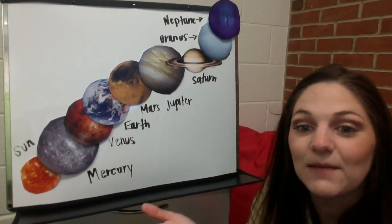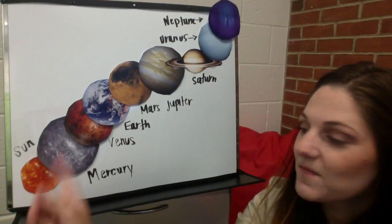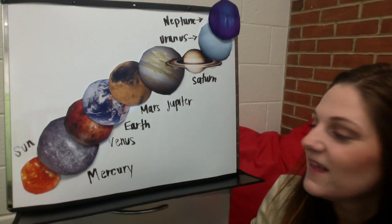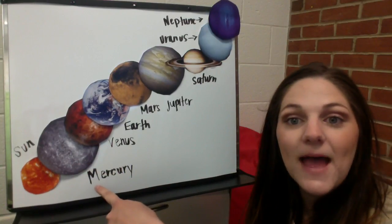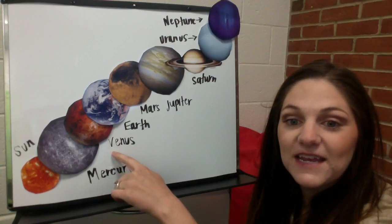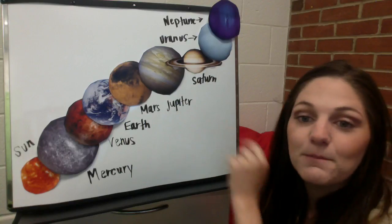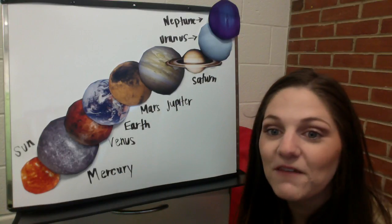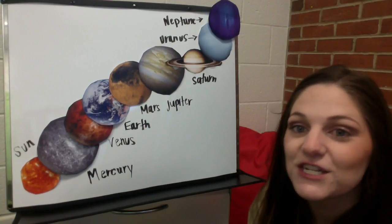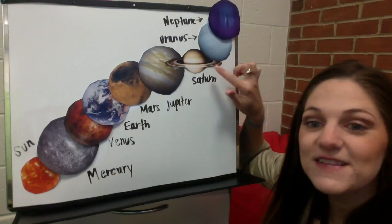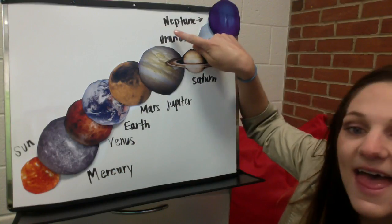Now you can see that I labeled each planet with their name. First we have the Sun, which is a star — S for Sun. Then we have Mercury — M for Mercury. V for Venus. E for Earth. M for Mars. Mars and Mercury both have the letter M. J for Jupiter. S for Saturn. U for Uranus. And N for Neptune.